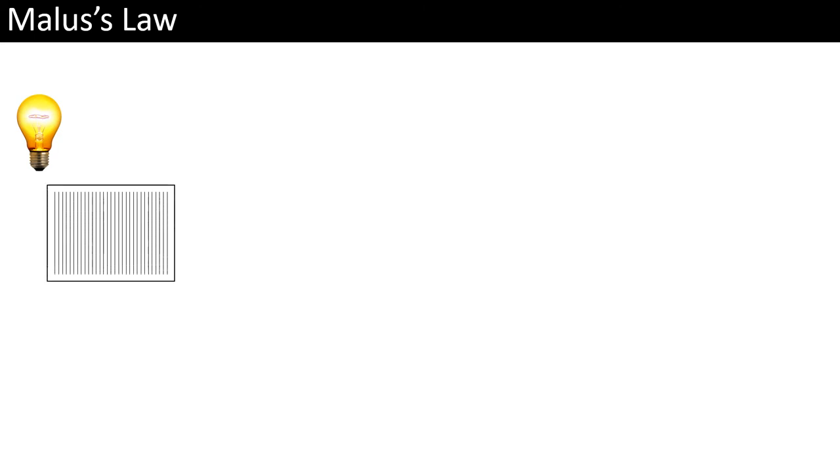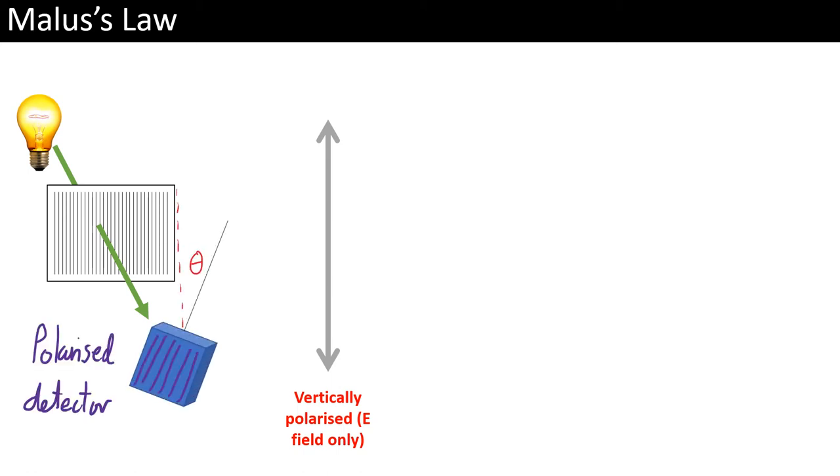Malus's law helps us explain how intensity of light can shift as we change the polarization planes of light. So here we have an unpolarized source, which is then going to be vertically polarized. And if it hits a detector which happens to be polarized, the light intensity is going to drop even further.